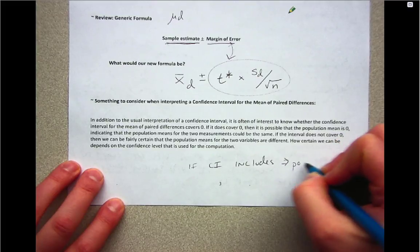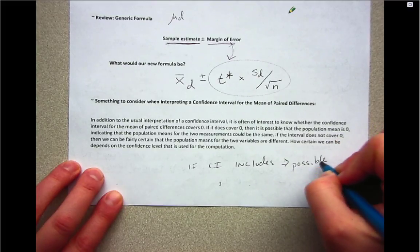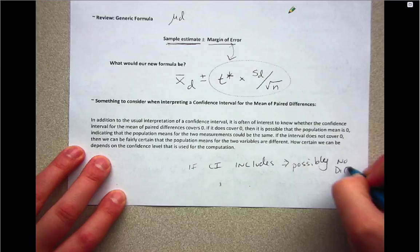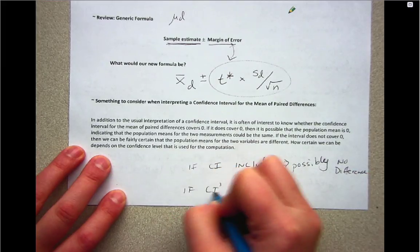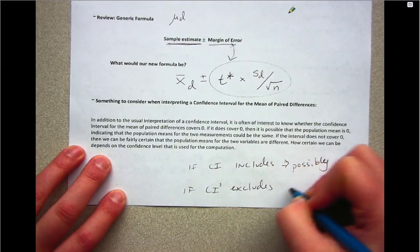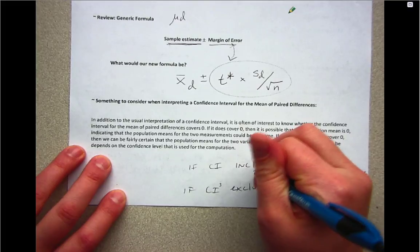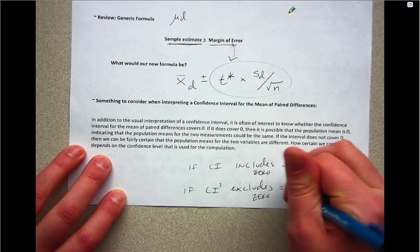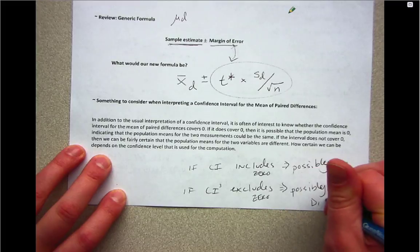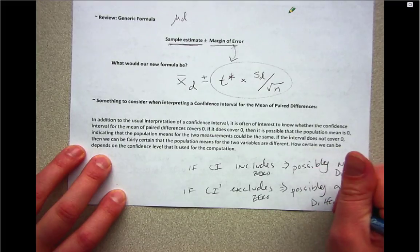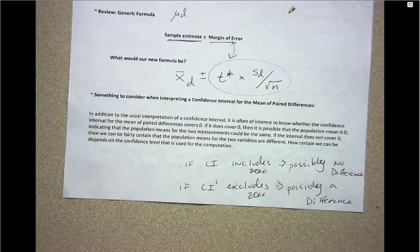If the confidence interval includes zero, there's possibly no difference. And if it excludes zero, that indicates that there is possibly a difference. When you're comparing two groups, including zero indicates that there's possibly no difference, and if a confidence interval excludes zero, it indicates there possibly is a difference between the two measurements.